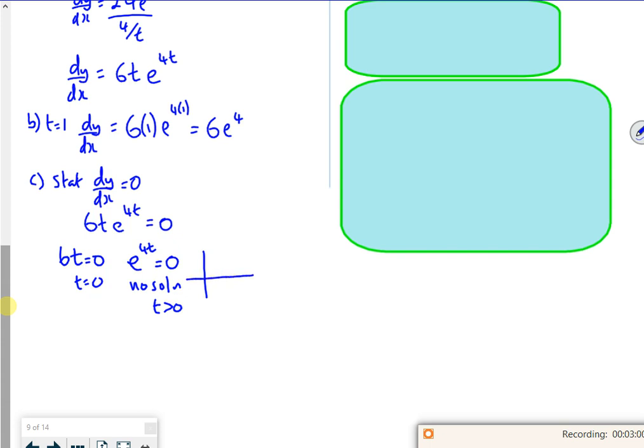And this one has no solutions, because e to the 4t has to be greater than 0. There we go.